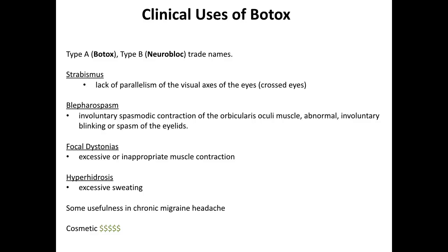Clinical uses of botulinum toxin involve conditions where abnormal or unwanted muscle contraction occurs. This includes strabismus, which is a lack of parallelism of the visual axes of the eyes — so crossed eyes. Blepharospasm, which is involuntary spasmodic contraction causing spasm of the eyelids. Focal dystonia, which is excessive or inappropriate muscle contraction. Hyperhidrosis, which is excessive sweating. There is also some usefulness of Botox for chronic migraine treatment, as well as cosmetic uses.